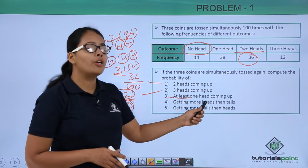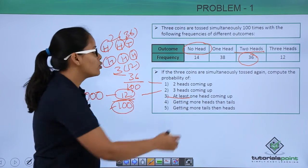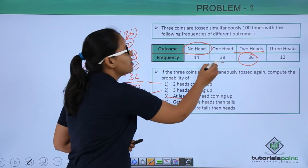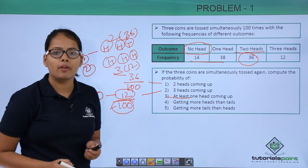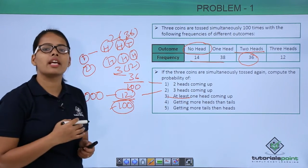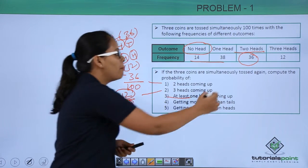Now getting more tails than heads. In this case, 14 plus 38 because the number of tails appeared will be more than heads.